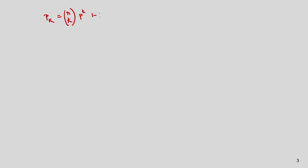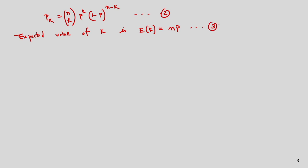From the previous slide, the probability that k points fall in region R follows the binomial distribution (equation 2). The expected value of k is E[k] = np — equation number 3. The binomial distribution peaks sharply around the mean, so k concentrates around np.